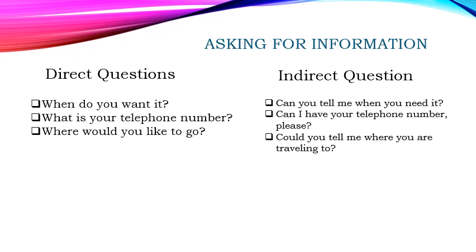Here are examples of direct and indirect questions. A direct question uses a WH term, while an indirect question uses modal auxiliary verbs. For example: 'When do you want it?' can be asked as 'Can you tell me when you need it?' 'What is your telephone number?' becomes 'Can I have your telephone number, please?' And 'Where would you like to go?' can be 'Could you tell me where you are travelling to?'